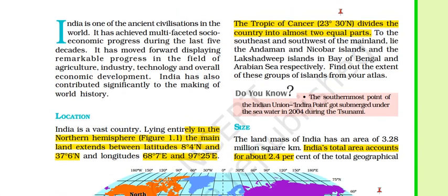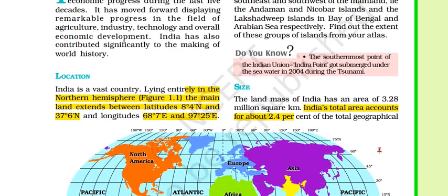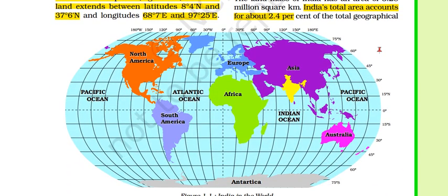This first part is introductory. We will come to the important part which is location. To understand location, the important concepts are the equator and the prime meridian. We divide the earth into two equal parts horizontally — this is called the equator — and vertically, this is called the prime meridian. The north portion is the northern hemisphere, the south portion is the southern hemisphere, the eastern portion is the eastern hemisphere, and the western portion is the western hemisphere.